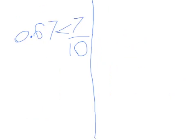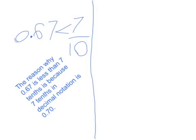67 hundredths in decimal notation is less than 7 tenths in fraction notation. The reason why 67 hundredths is less than 7 tenths is because 7 tenths in decimal notation is 70 hundredths.